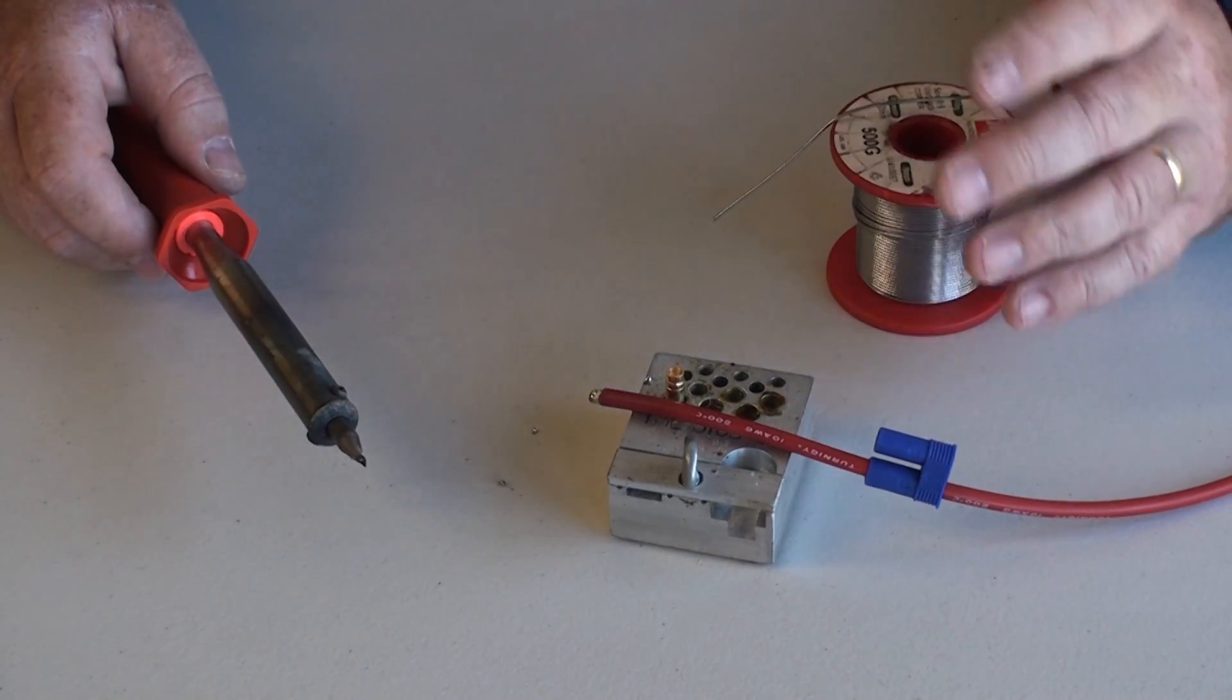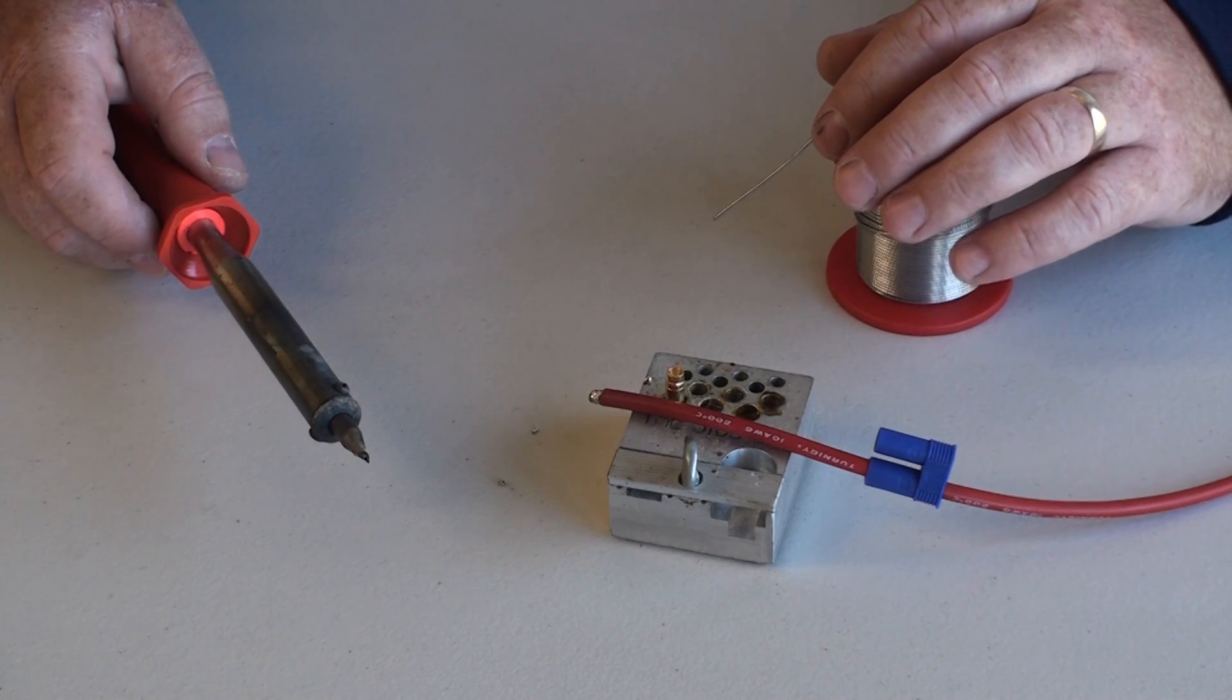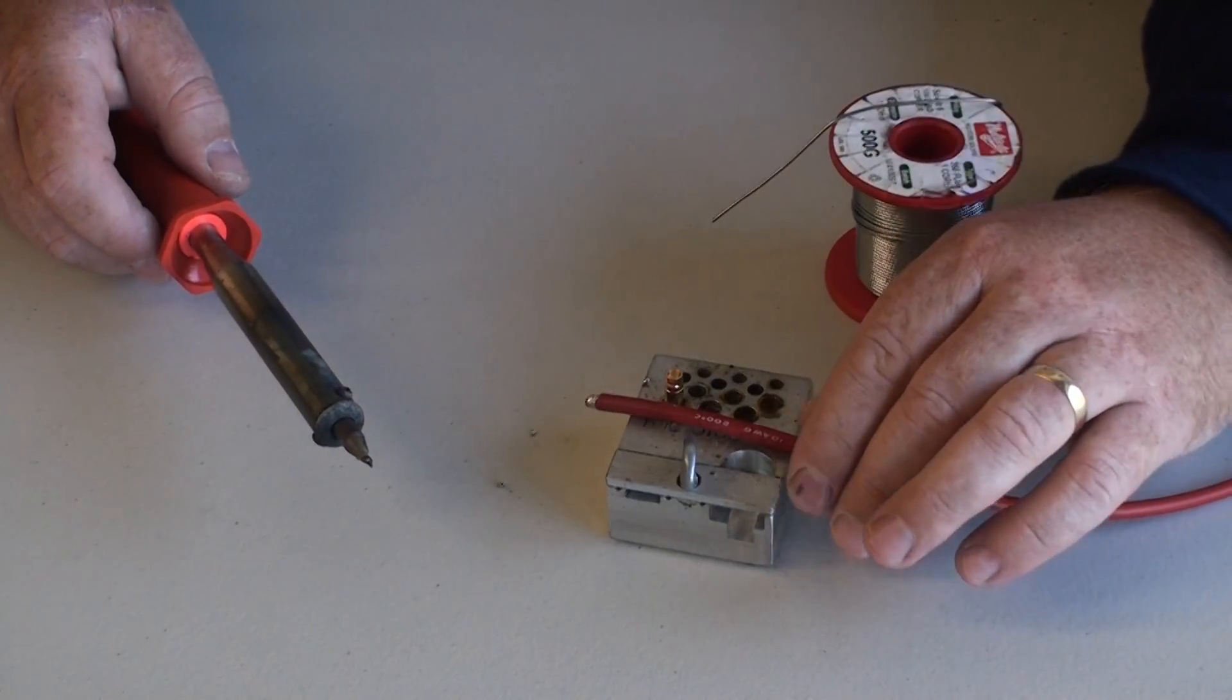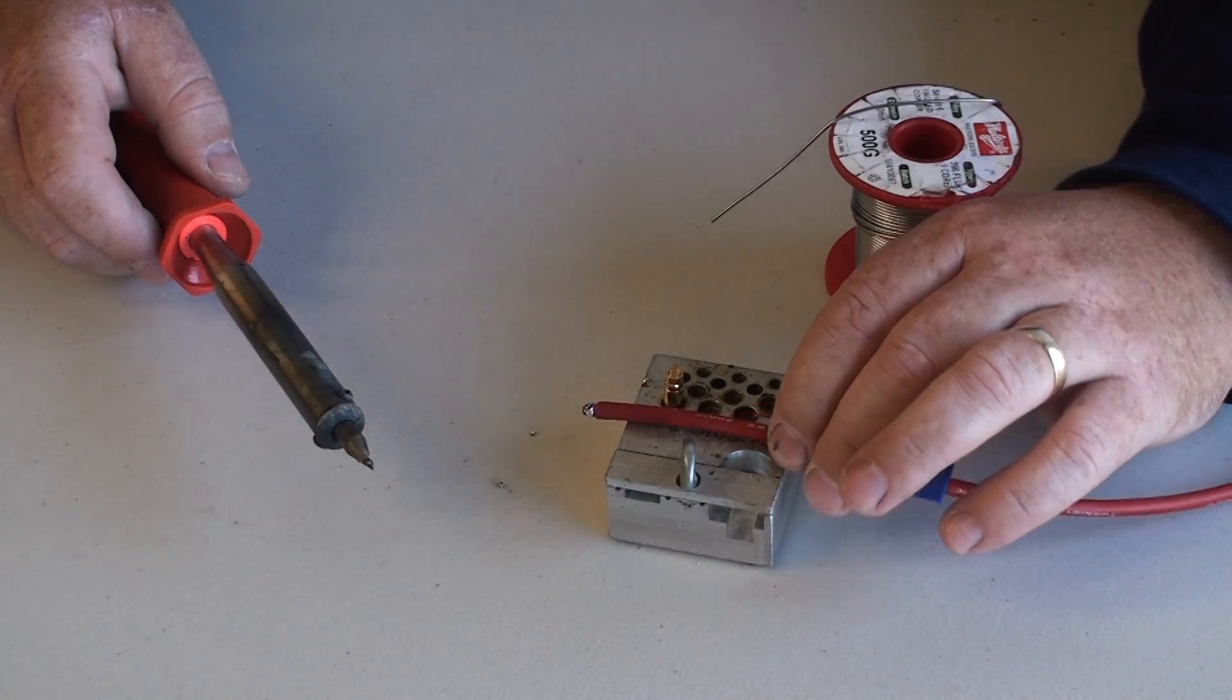Then remove the heat, and you'll see we'll end up with a nice pre-tinning of the wire on the end of the battery lead. That looks great.